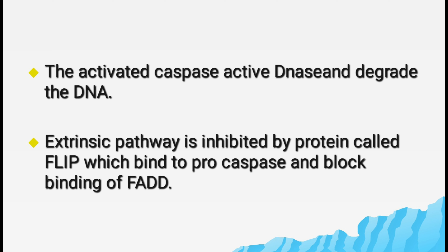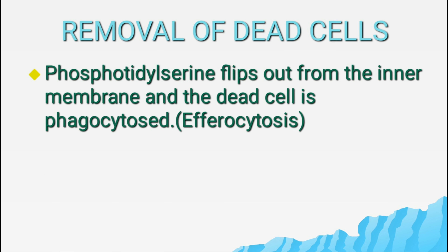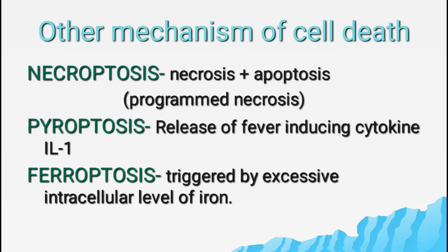Caspase 8 and 10 further activate caspase 3 and 6. The activated caspases cleave inhibitors of DNase enzymes, making DNase active to degrade DNA. For removal of dead cells, phosphatidylserine flips from the inner membrane to the outside of the outer membrane, where it is recognized by phagocytes. This process of removal of dead cells is called efferocytosis — the burying of dead cells.